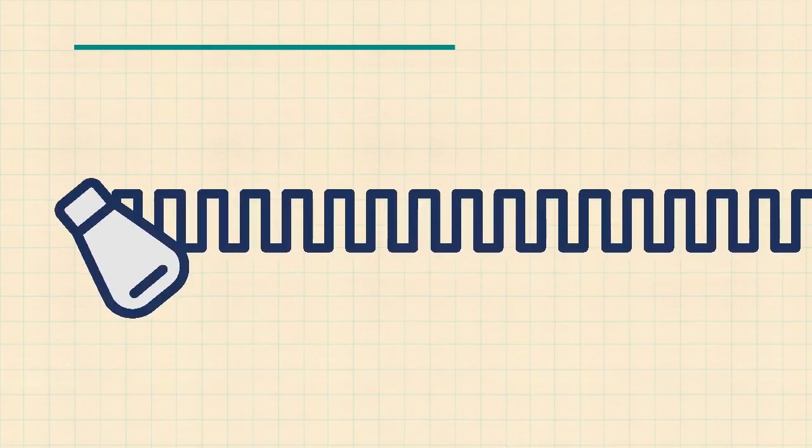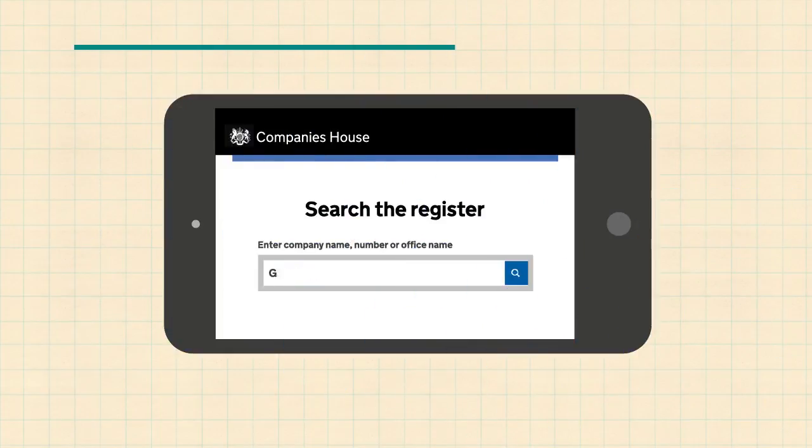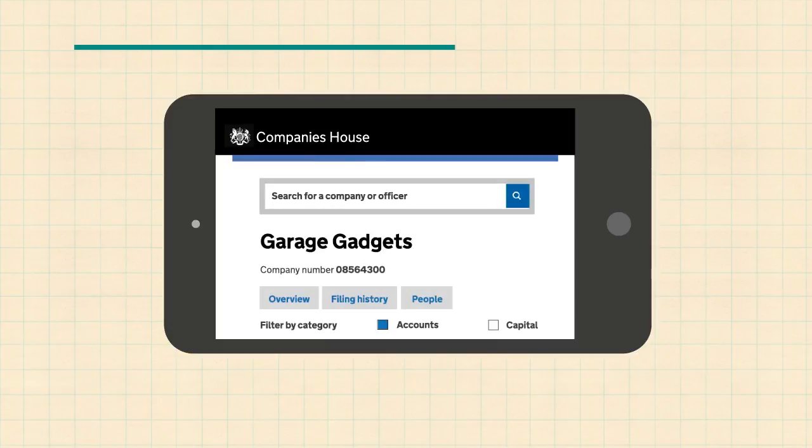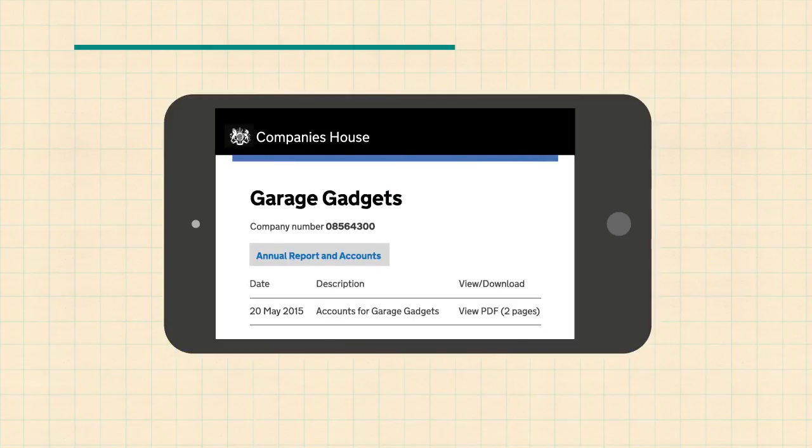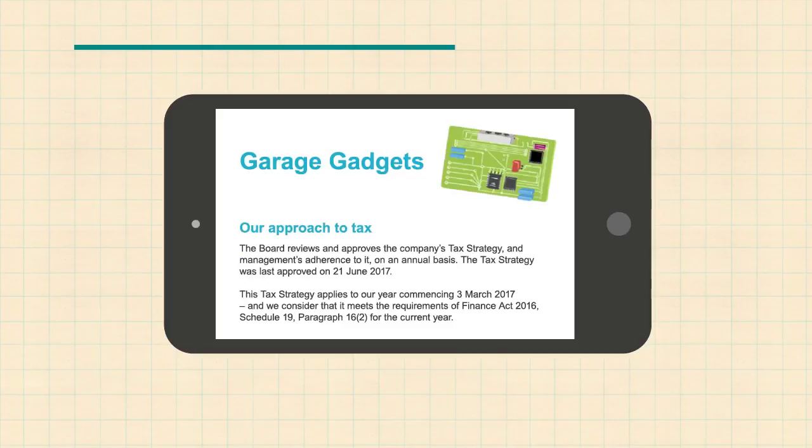But all UK companies lodge their accounts with Companies House, and this information is available online. And, thanks to 2016 legislation, all large businesses in the UK now have to publish details of their tax strategy too.